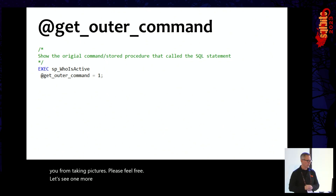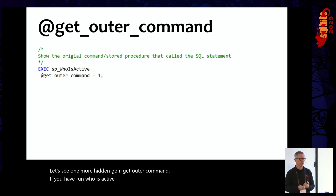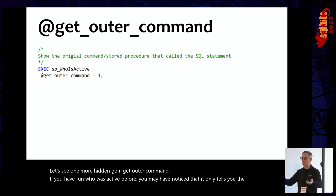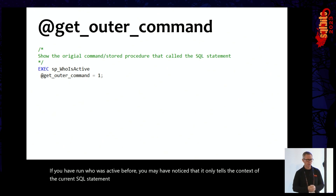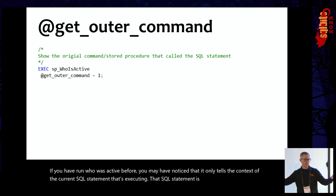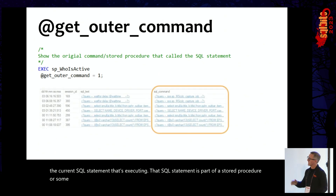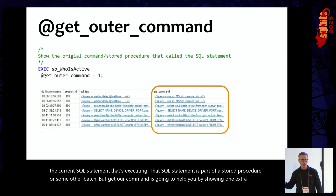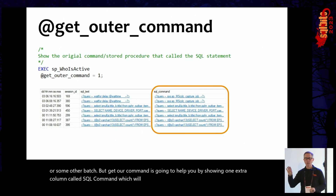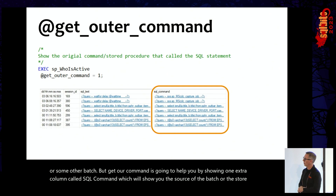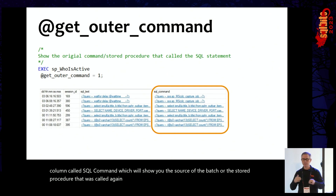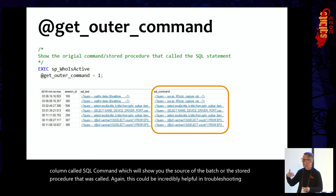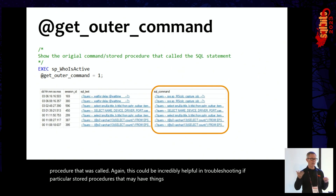One more hidden gem: get_outer_command. If you have run Who Is Active before, you may have noticed it only tells you the context of the current SQL statement executing. What if that SQL statement is part of a stored procedure or some other batch? Get_outer_command helps by showing one extra column called SQL_command, which shows you the source of the batch or stored procedure that was called. This can be incredibly helpful for troubleshooting stored procedures that may have things like WAITFOR DELAY.